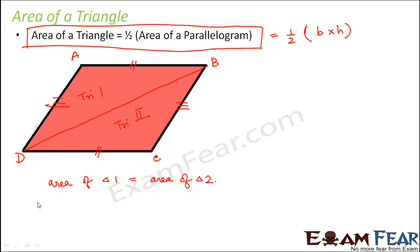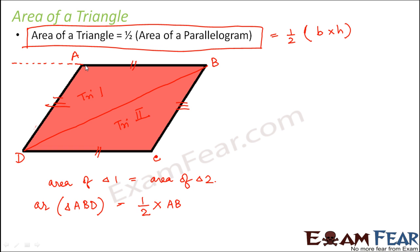Let's name this parallelogram ABCD and find the area of triangle ABD. The area of triangle ABD is half times base times height. Taking AB as the base, the height is the perpendicular drawn from the opposite side onto AB. Let's call this point E, so the area is half times AB times DE.